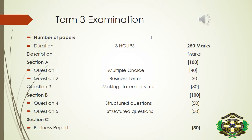Term 3 examination. You are going to write one paper, which has a duration of 3 hours and is going to be 250 marks. The paper is divided into 3 sections: Section A, Section B, and Section C. Section A, Question 1 will be multiple choice, which will be 40 marks.